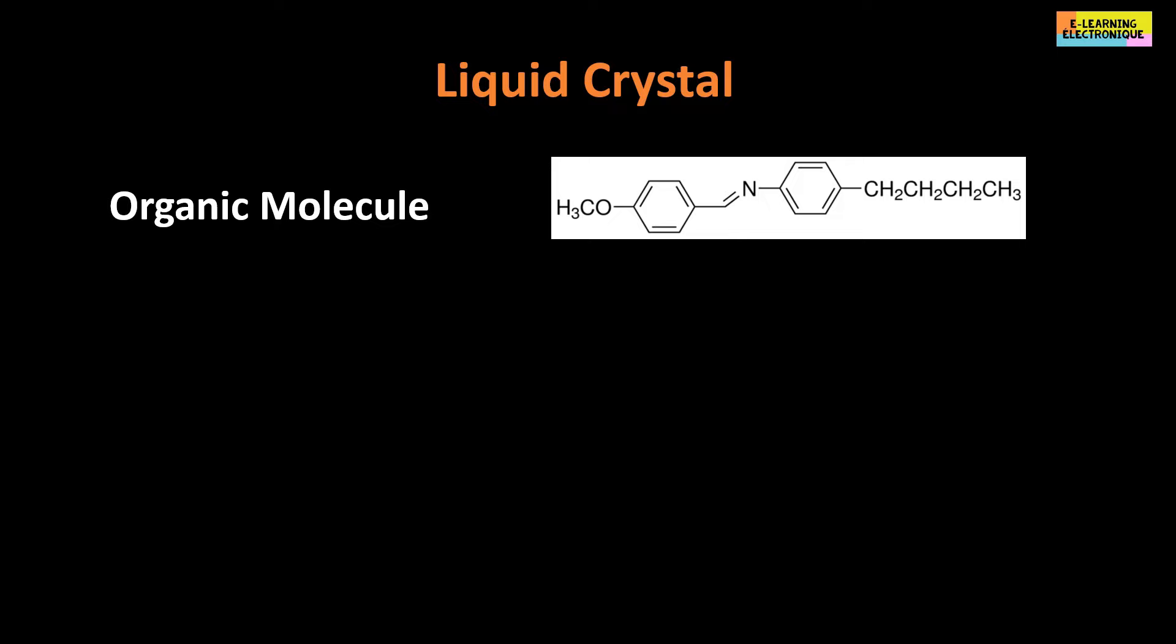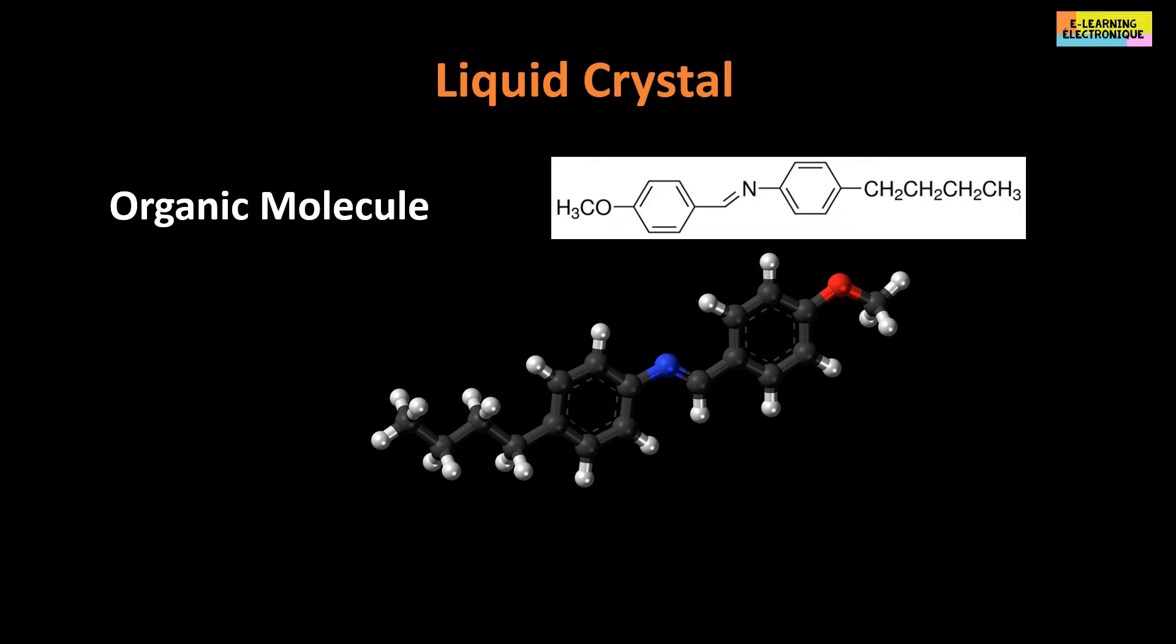In this molecule, a part is flexible. It is that which is responsible for the fluidity of the crystal. There is a rigid part. It is called mesogen. Here an example of liquid crystal, the MBBA.